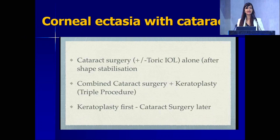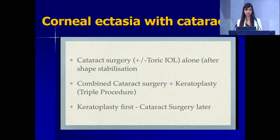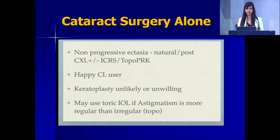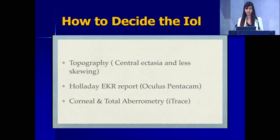The dilemma is whether you are doing only a cataract surgery, doing a combined cataract with corneal transplant, or if you have done a corneal transplant first, then cataract surgery — what are the dilemmas you deal with? If you are doing cataract surgery alone, it will typically be an older patient who has naturally become non-progressive, a contact lens user happy with his ectatic cornea, or a patient unwilling for keratoplasty. So how do you decide the IOL?